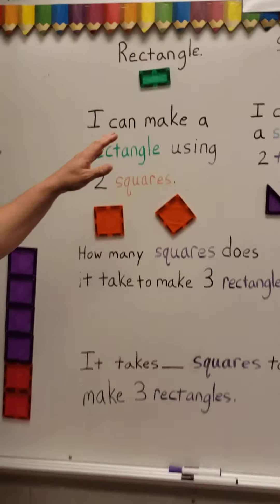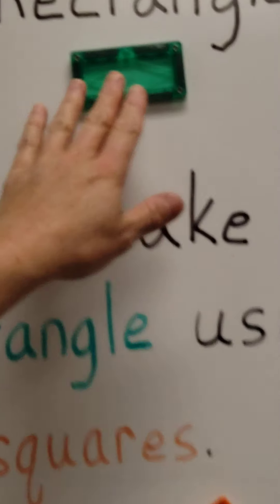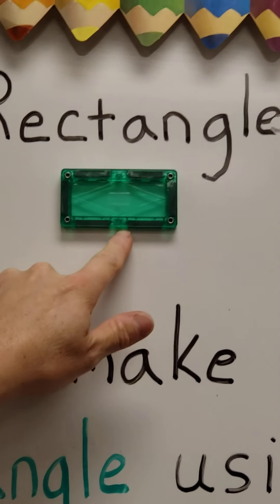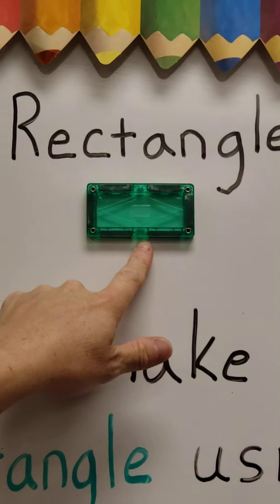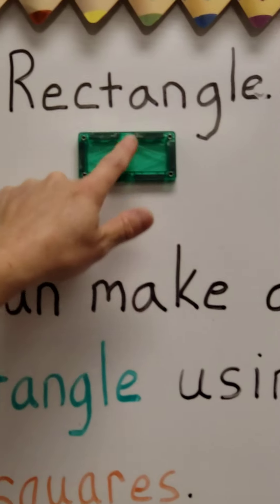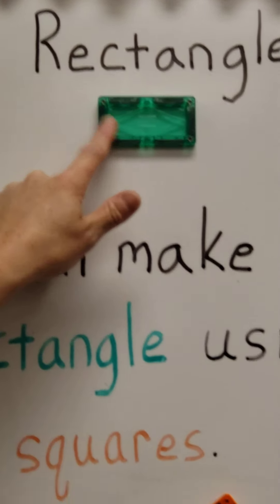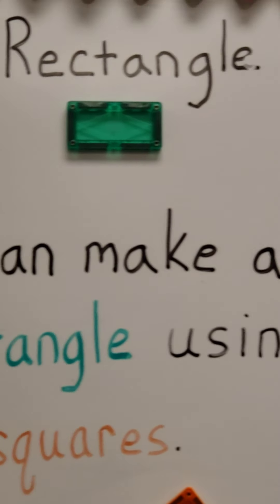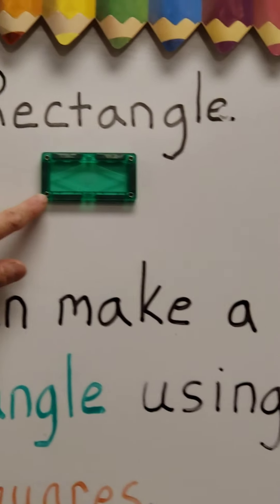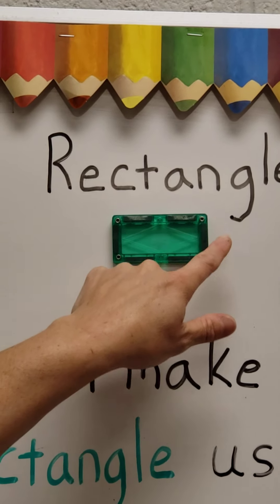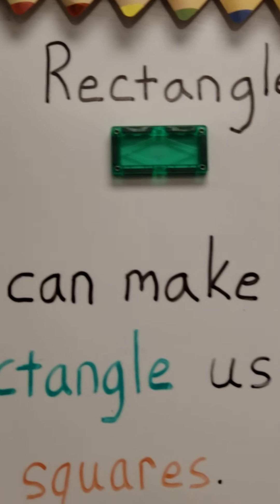So our first shape that we're going to take a look at is a rectangle. And a rectangle has four sides — one, two, three, four — and it has four vertices. And vertices are the points where the sides meet.